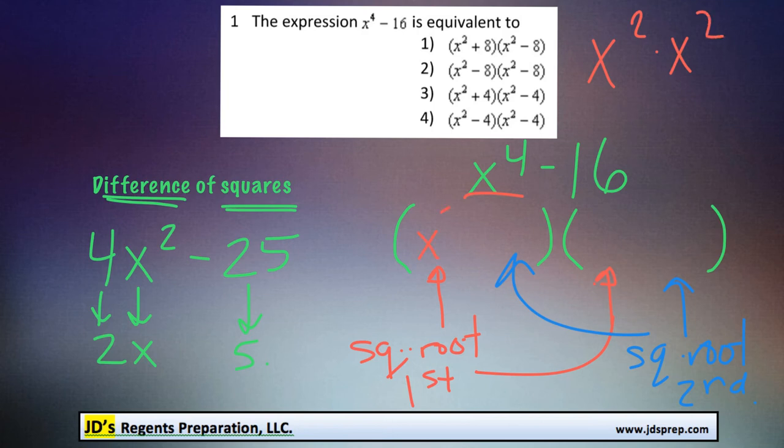So we're going to write x squared in the front of each set of brackets. And then the square root of our second term, in this case 16, goes in the last section of the brackets. So the square root of 16 is 4.